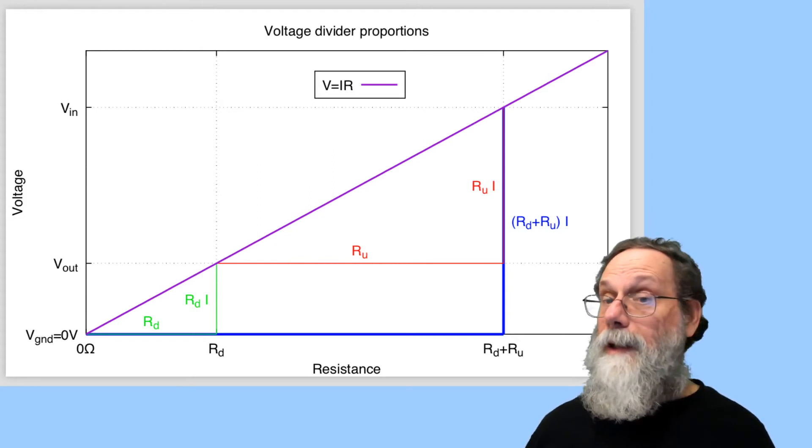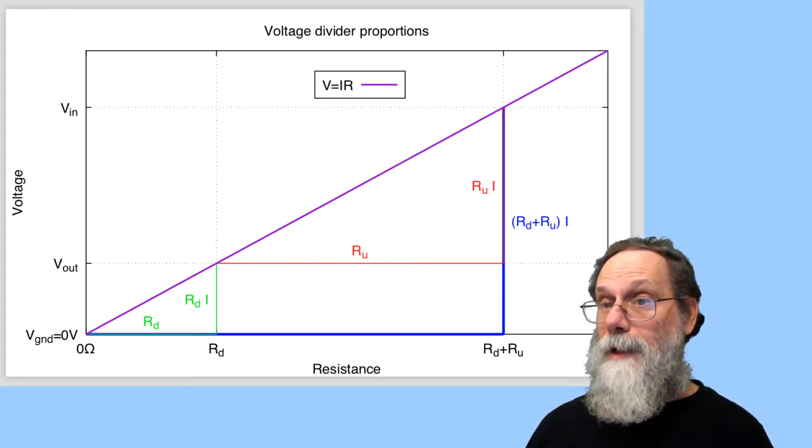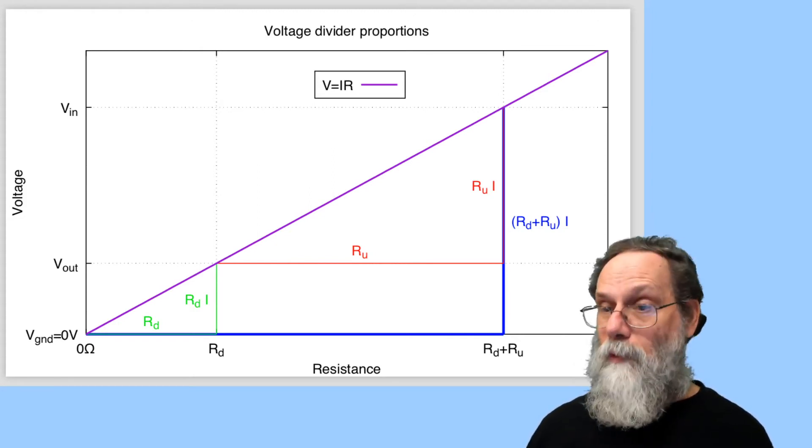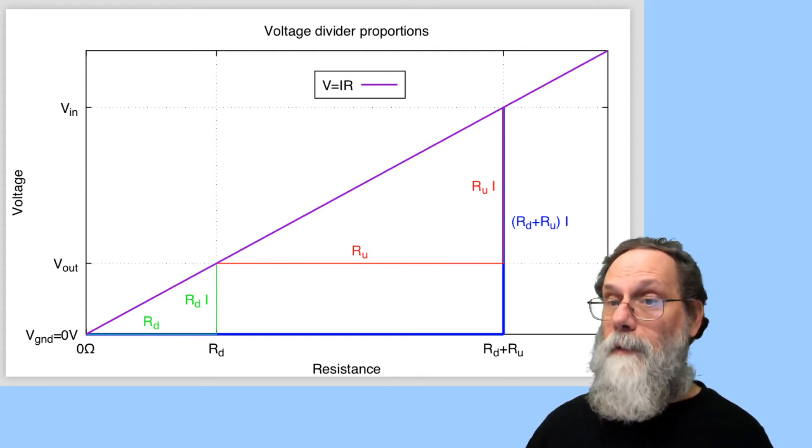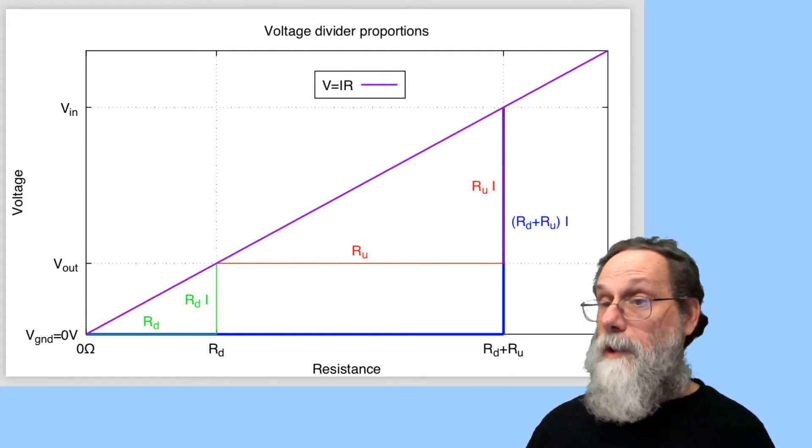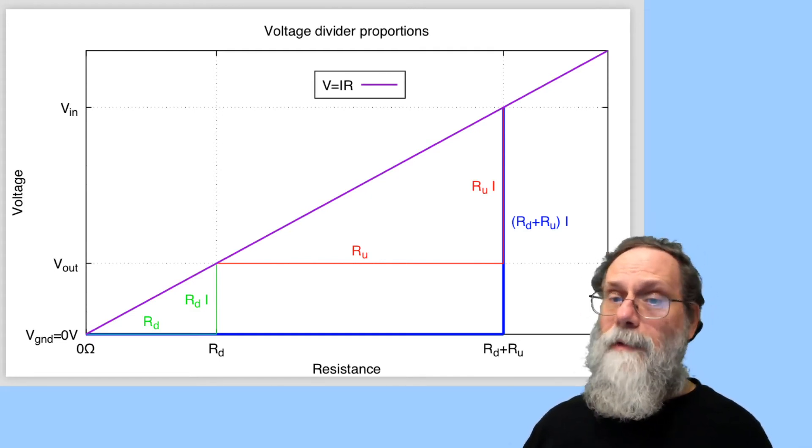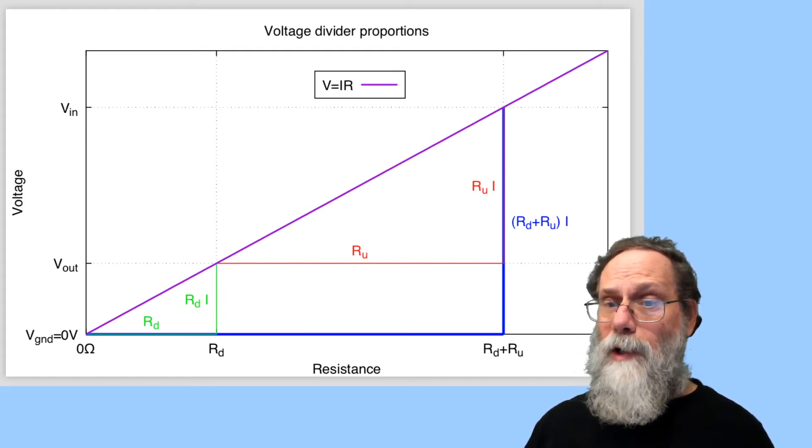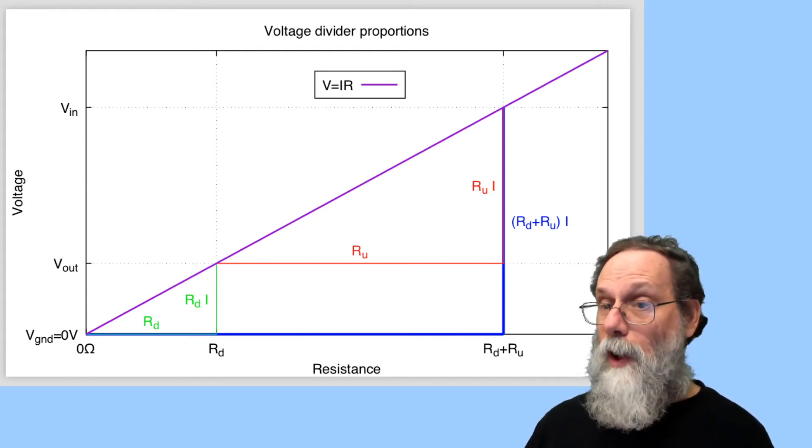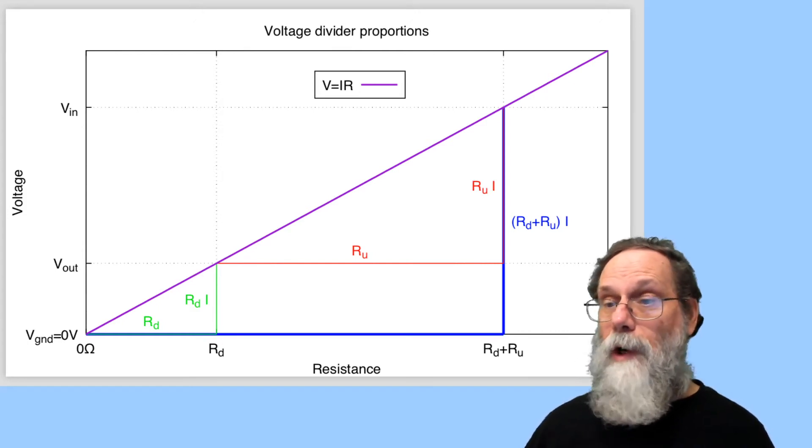Multiply it by I and you get the vertical line there. That is my input voltage. Rd plus Ru, that quantity times I gives me my input voltage. And if you look at what's the output voltage, well, I'm doing the same thing except I'm only going across one resistor here, just the Rd resistor, and so the voltage across it is just Rd times I and that gives me my output voltage.